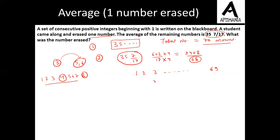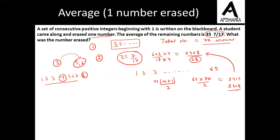The summation of numbers from 1 to 69 uses the formula n(n+1)/2. So this will be 69 times 70 divided by 2, which equals 69 times 35, giving us 2415. Initially we had 69 numbers. After a student deletes one number, the total sum becomes 2408. So the number deleted must be 2415 minus 2408, which is 7.